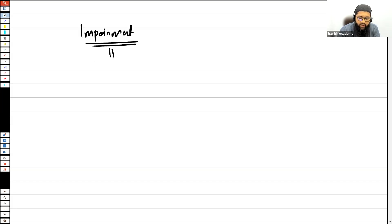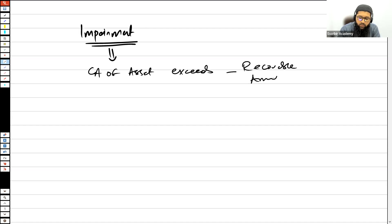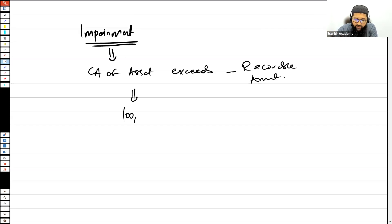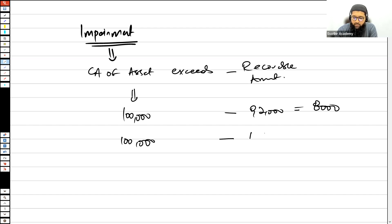The first thing to understand is what exactly impairment is. Impairment loss arises whenever the carrying amount of the asset exceeds its recoverable amount. So if the carrying amount is $100,000 and the recoverable amount is $104,000, there is no impairment loss, because impairment only arises when the carrying amount exceeds the recoverable amount.